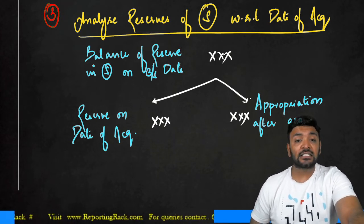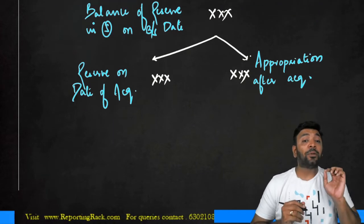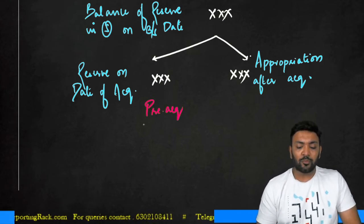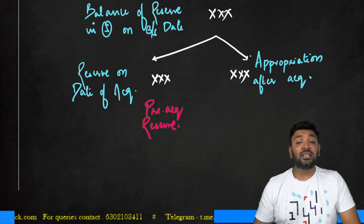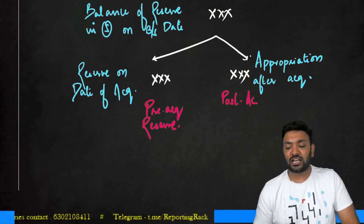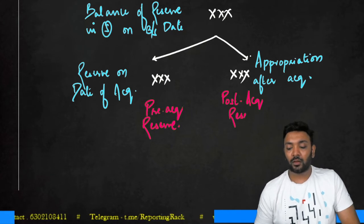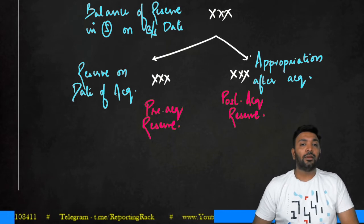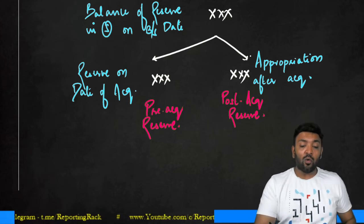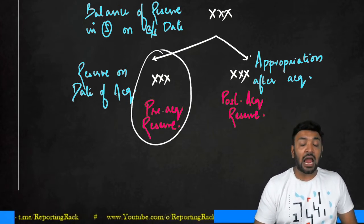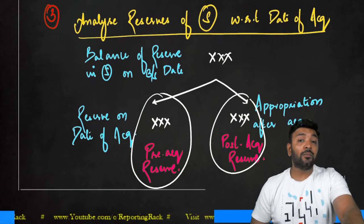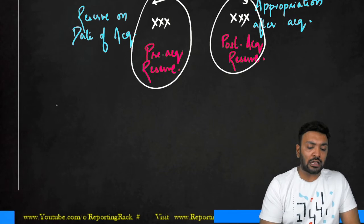The reserve existing on the date of acquisition is called the pre-acquisition reserve — the reserve already existing before acquisition. The portion that has been appropriated after the date of acquisition is called the post-acquisition reserve. So for each reserve in the subsidiary, I have to identify what is the pre-acquisition amount and what is the post-acquisition amount.